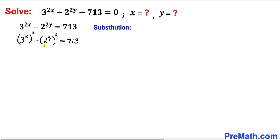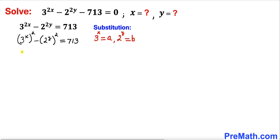In order to make our job simpler, let's make a substitution. Let 3^x equal to a and 2^y equal to b. Then our given equation simplifies to a² minus b² equals 713.